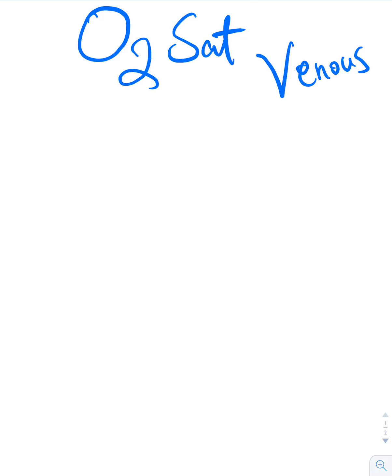Welcome to our lecture today where we will be talking about O2 saturation on the venous side. We all know how to get an ABG — arterial blood gas — where we're looking for the O2 content in the artery. But what information will a venous blood gas help us? A venous blood gas, or what we call a VBG.